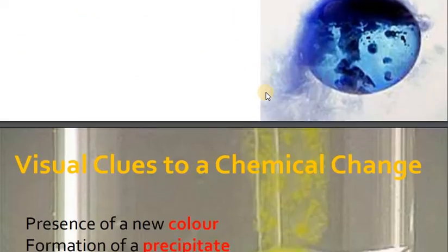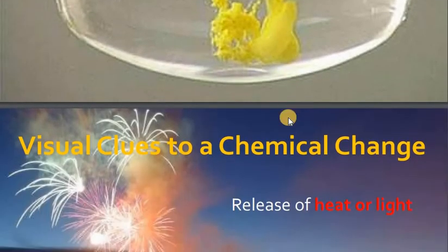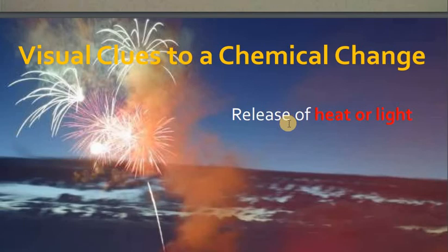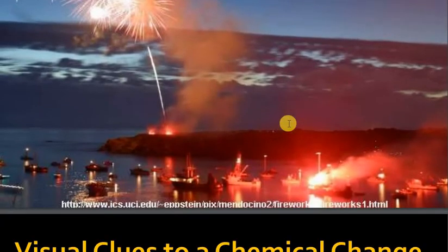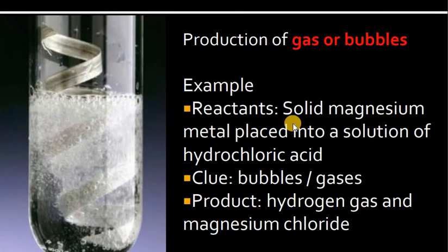For example, if we have lead nitrate solution and add KI (potassium iodide), lead iodide is formed, which has a yellow precipitate. This is a type of reaction where color changes and precipitates are formed. Along with that, heat or light may be generated, as in burning reactions. Another example is the production of gas — when magnesium reacts with hydrochloric acid, hydrogen gas is produced with bubbles. These all represent chemical change.